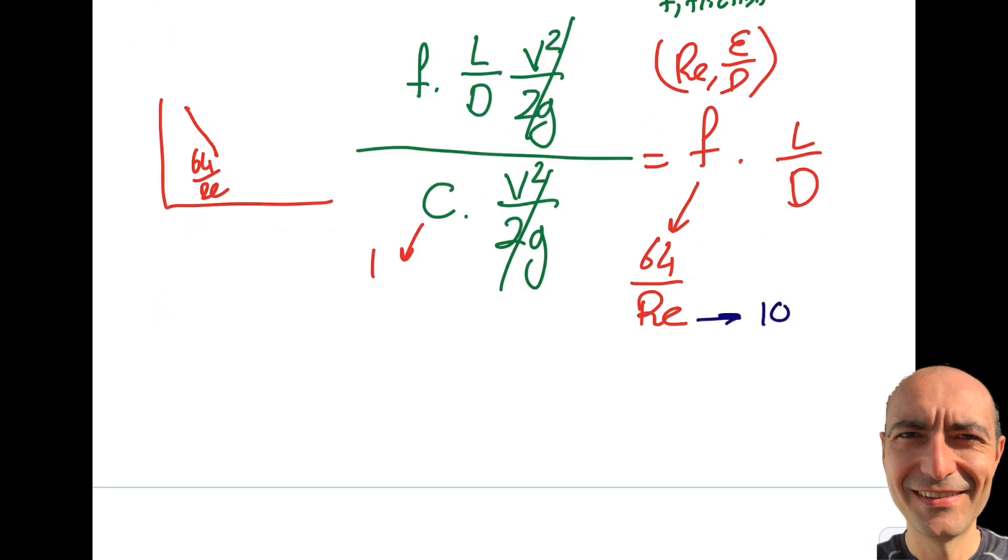I gave this Reynolds number is 100. So let's rewrite this whole thing. So it's going to be 64 over 100. That will be my F value times length of this pipe is 10 meters and the diameter is if I'm not mistaken 1 meter. So let's double check this. What is the unit of 64 over 100?